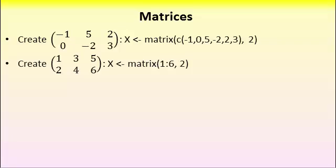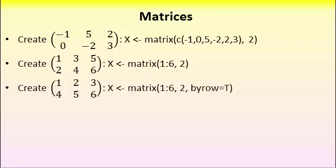The default setting in R is to fill the matrix column by column. So we start by filling the first column then the second then the third and so on. You can ask R to fill row by row instead by using the following command. Matrix 1 colon 6 comma 2 comma byrow equal to T where T is for true. Then it will use the numbers in the vector 1 through 6 and it will fill out row 1 first, 1 2 3, and then it will continue on row 2.